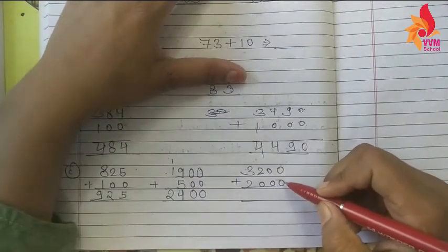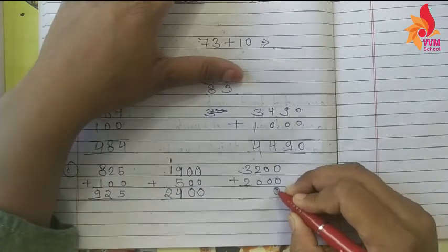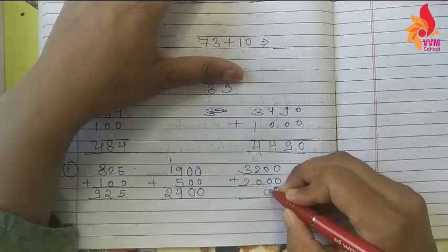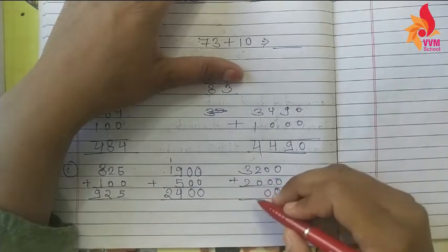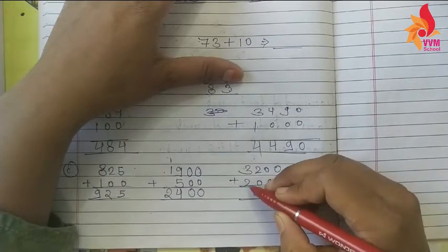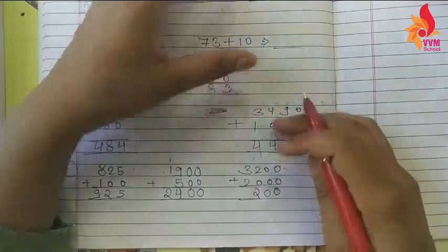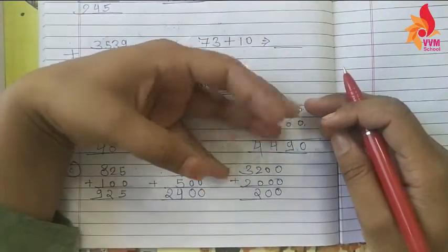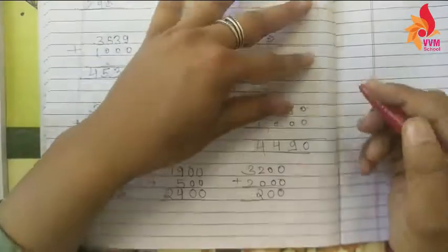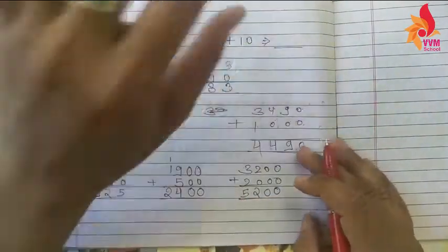Zero mein zero add karenge: zero plus zero is equal to zero. Zero plus zero is equal to zero. Two plus zero is equal to two. Three plus two is equal to five — one, two, three plus two: total kitne ho gaye? Five — yahan pe write kar denge. Theek hai?